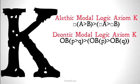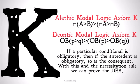For deontic modal logic, it looks pretty much the same. We've just replaced A and B with P and Q, and necessity with OB, or obligation. Basically, if a particular conditional is obligatory, then if the antecedent is obligatory, so is the consequent.